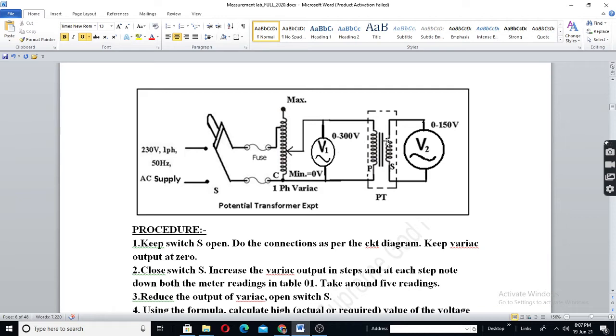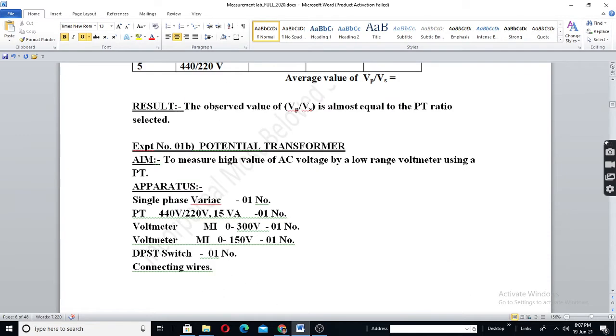So, voltmeters will be of low range. Say 300 V or 1 KV, 2 KV maximum say 10 KV. Now, this experiment is regarding how to measure high AC voltage using low range voltmeter, normal voltmeter and a PT.